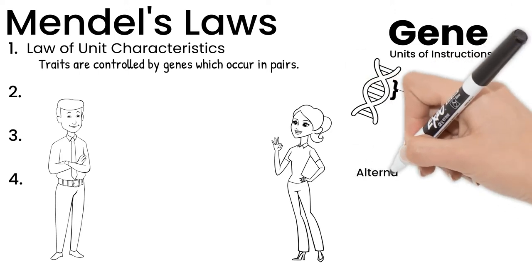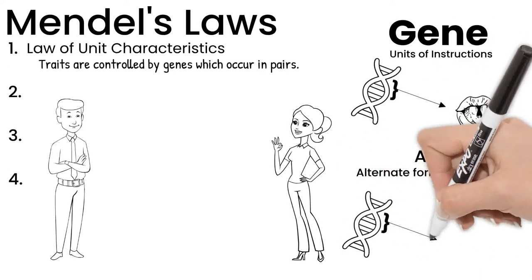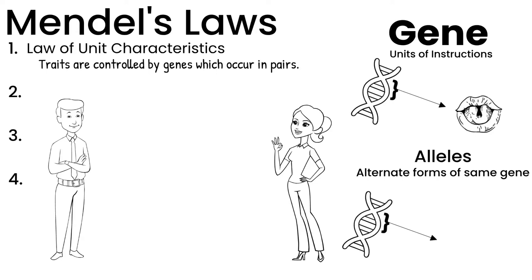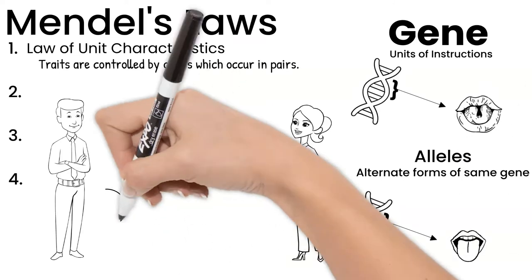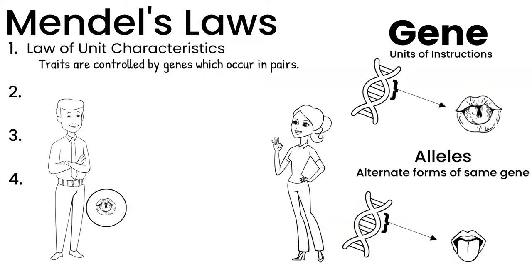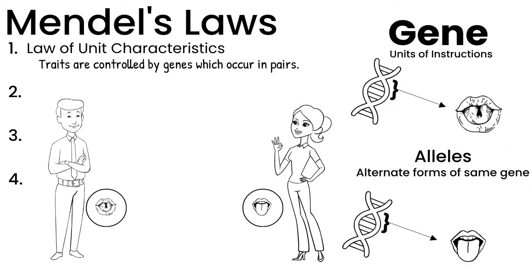Alleles are alternate forms of the same gene. In that same spot on your mom's chromosome, it says "don't make extra muscles in the tongue — it doesn't need to roll." So your dad has the allele to roll his tongue, but your mom has the allele to not roll. If you got both alleles, why are you able to roll your tongue?